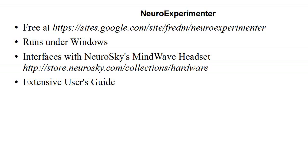In this video I will describe some software that I wrote called Neuro Experimenter. This software is free. You can download it at the site listed here. The software runs under Windows 7, and it probably runs under Windows 8 and earlier versions of Windows, although it has not been tested there.